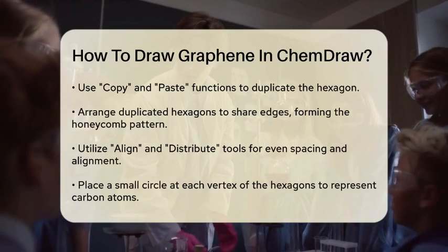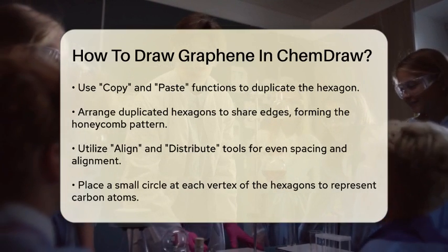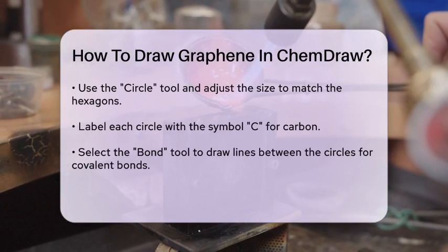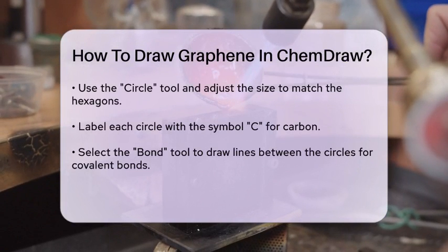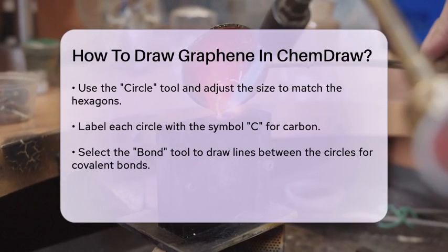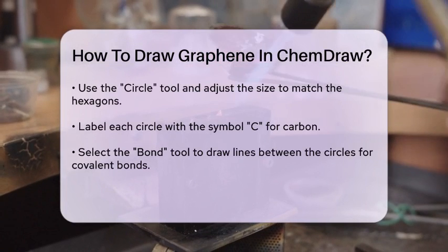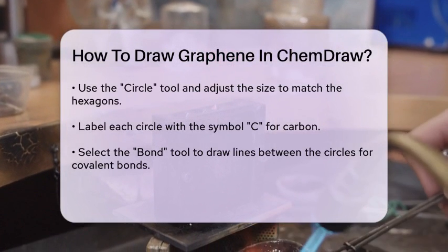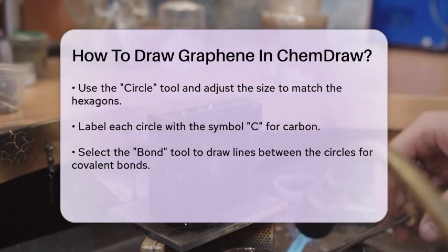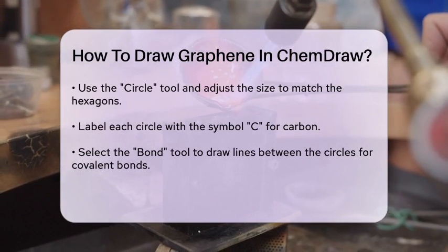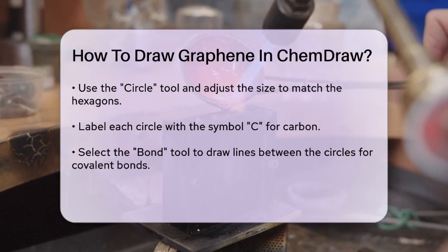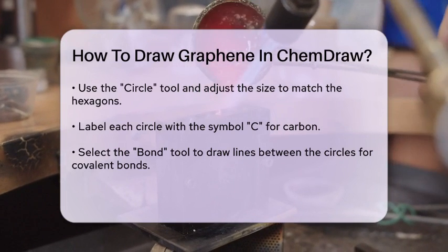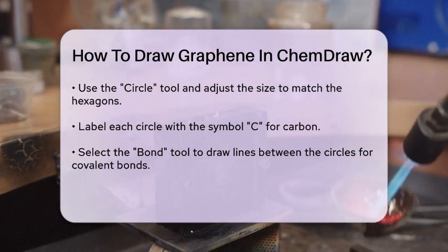Once you have your hexagonal pattern, it's time to add the carbon atoms. You can do this by placing a small circle at each vertex of the hexagons. Use the Circle tool for this step and make sure to adjust the size to match the scale of your hexagons. After placing the circles, you can label them with the symbol for carbon, which is C.